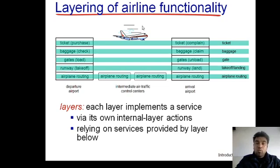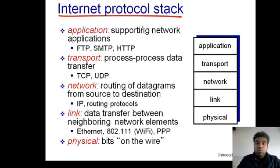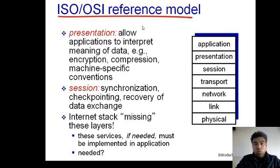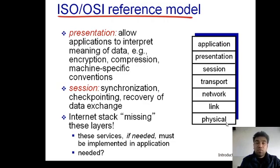In the same way, for data communication we have a common platform called the OSI model — also called the OSI reference model — because this is a theoretical approach for data communication. It has seven layers: Application, Presentation, Session, Transport, Network, Data Link, and Physical layer. At this common platform, all the things of data communication are arranged in a layered way.